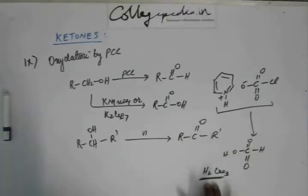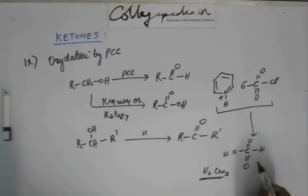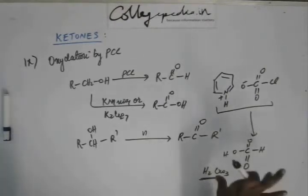Dihydrogen chromate. So, this has been reduced if you observe because one of the hydrogen has been added on this oxygen and one of the hydrogen has been on this carbon.